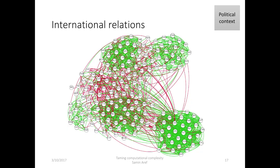Here we have a network of positive and negative international relations between countries. Using the algorithm, we can now simulate numerous scenarios leading to polarization of countries. This is essential in preventing a cold war situation where an enemy of an enemy is a friend. Thank you.